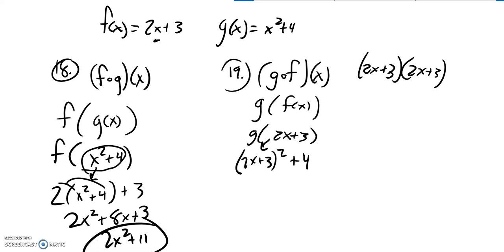So if I multiply this out, I actually get 4x squared plus 12x plus 9 plus 4. And then from here, I can combine up some like terms, 4x squared plus 12x.